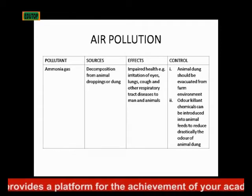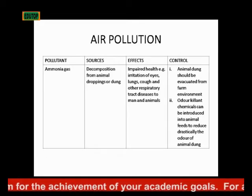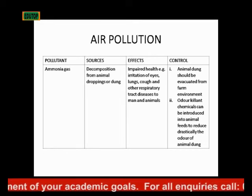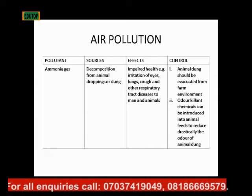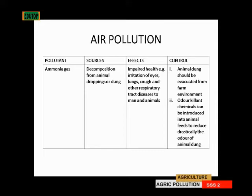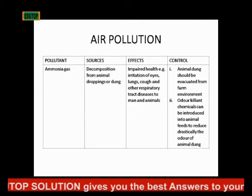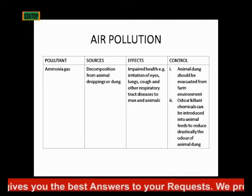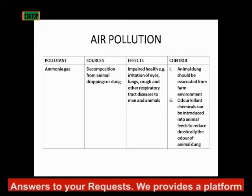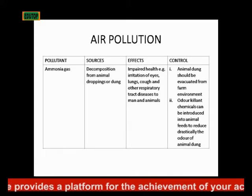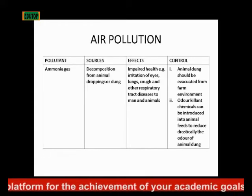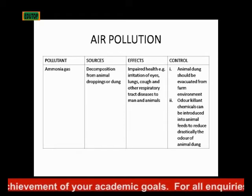A major pollutant of air pollution is ammonia gas. The source of ammonia gas in nature is decomposition from animal dung. When you have animal dung in the soil, it will decompose over time and emit ammonia — we discussed this also in the nitrogen cycle. When the dung of animals has decomposed, it will emit ammonia gas. The effect is that it impairs health — for instance, irritation of the eyes, irritation of the lungs, cough, and other respiratory tract diseases in man and his animals.